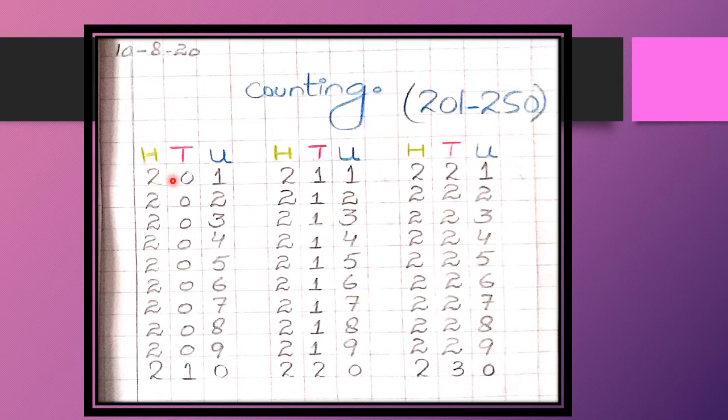First, you will have to write 100 in green, 10 in red, and ones you have to write in blue. Now, we will start counting.